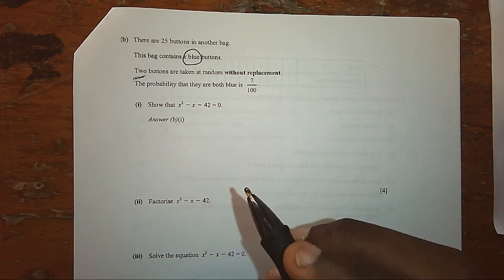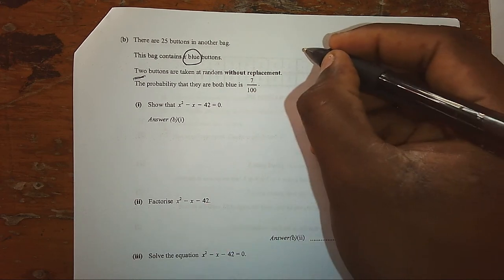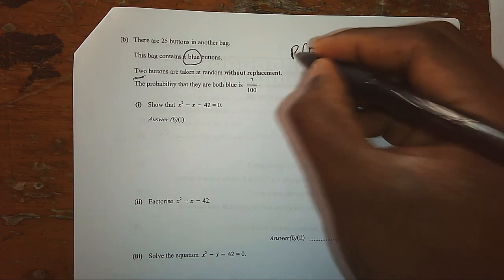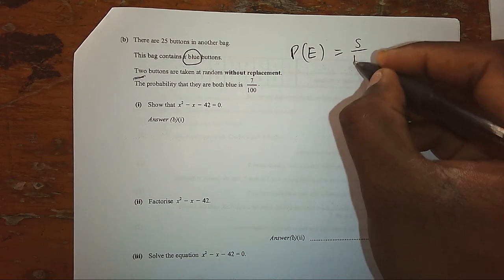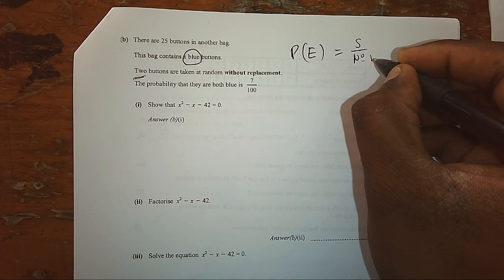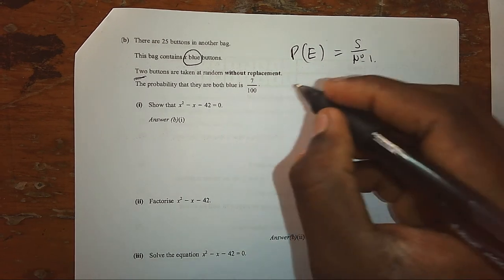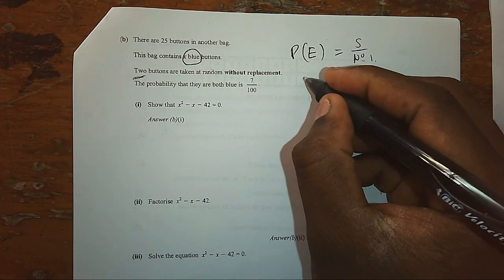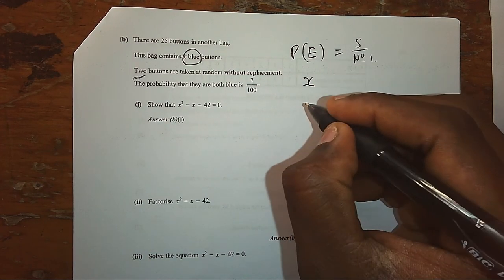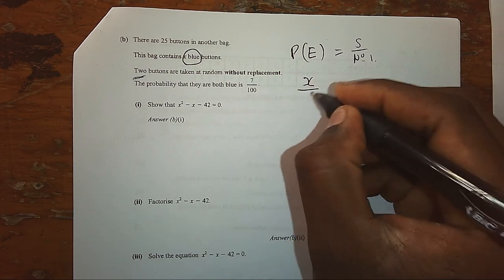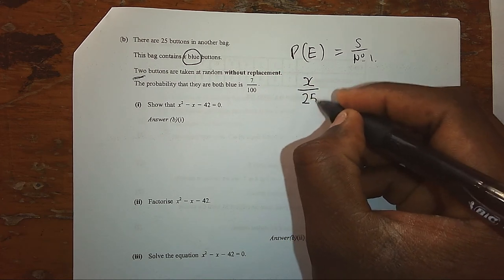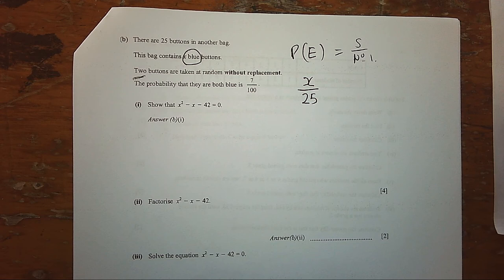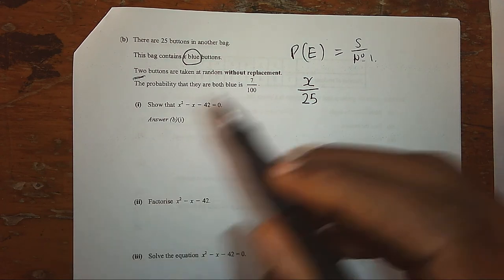We know that the simple probability of any event is given by success over number of items. Therefore, my simple probability for picking a blue button would be X, the success chances for picking blue, over the 25 number of buttons in this bag. But if I pick the second button, it is obvious that the number of blue buttons will be X minus one button.